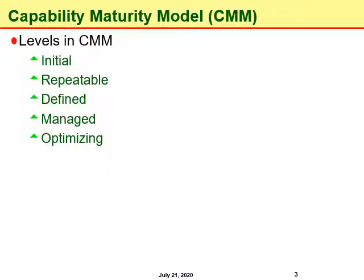The CMM has five levels and each level has various key process areas defined. To achieve a certain level of the CMM, the requirements related to that specific key process area have to be met. The five levels in CMM include: initial, repeatable, defined, managed, and optimized.